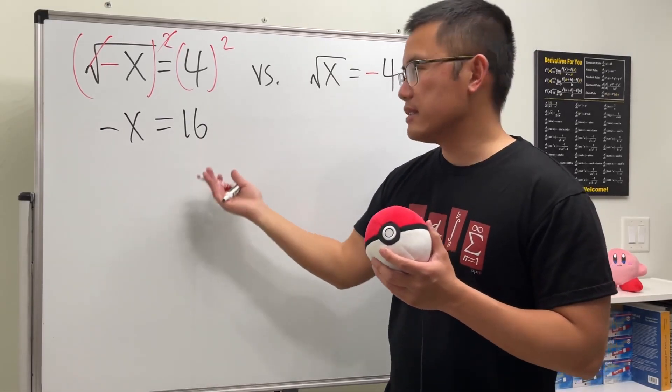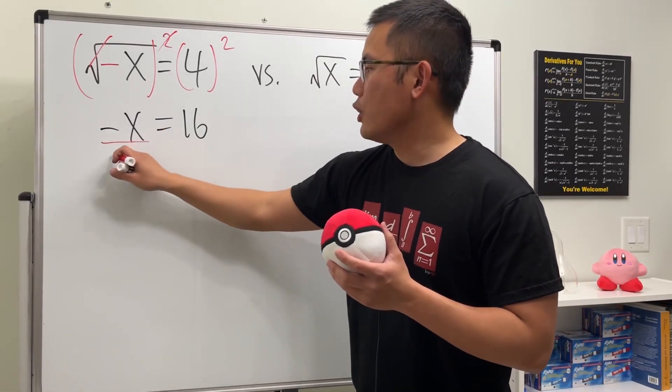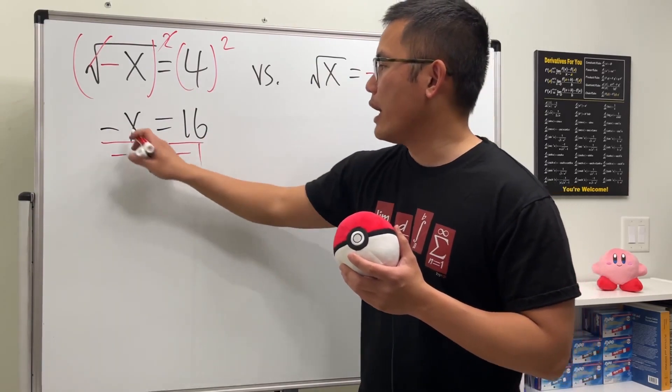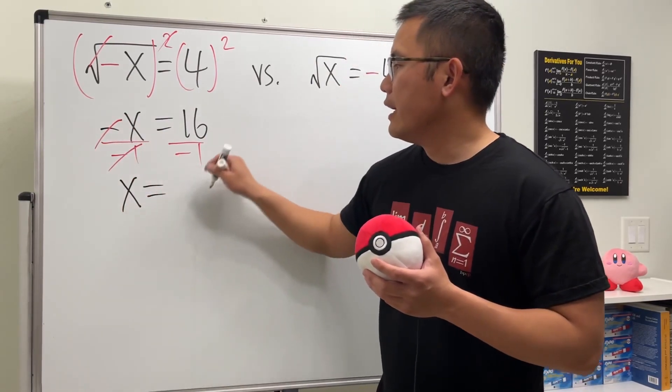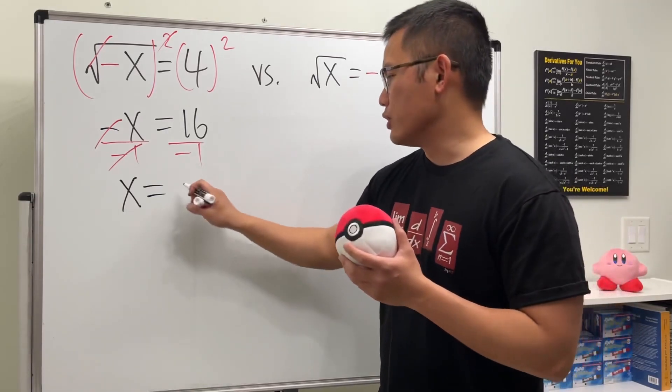Here we have negative x is equal to 16. Let's go ahead and divide both sides by negative 1 so that we can get positive x here, and 16 over negative 1 is just negative 16.